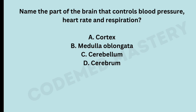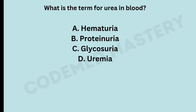Name the part of the brain that controls blood pressure, heart rate, and respiration. The right answer is option B, medulla oblongata. Option A, the cortex, is responsible for sensory processing, motor control, cognitive functions, language, and memory. Option C, the cerebellum, is responsible for coordination of movement, balance, posture, and motor learning. Option D, the cerebrum, is the largest part of the brain, responsible for sensory perception, voluntary movement, cognition, intelligence, emotions, and consciousness.